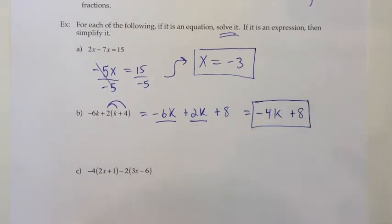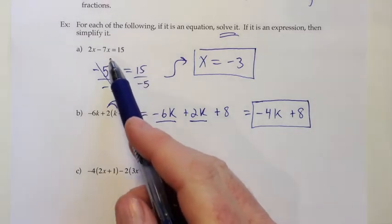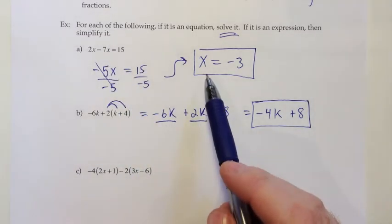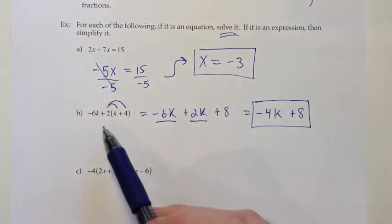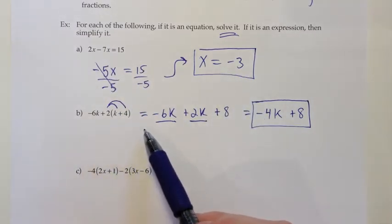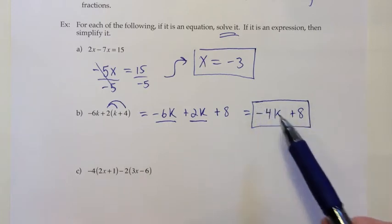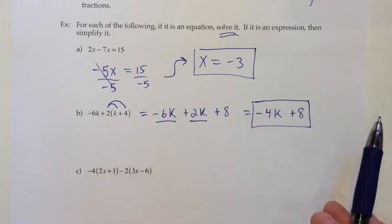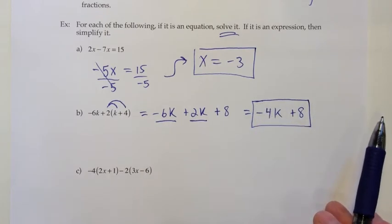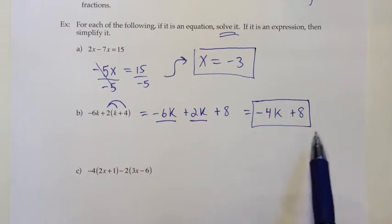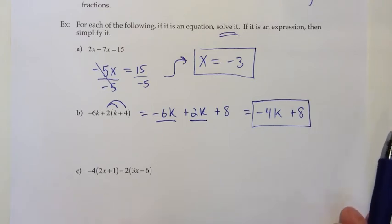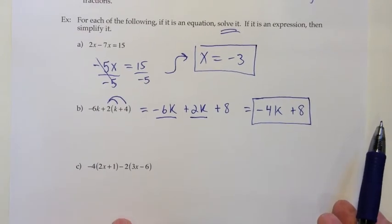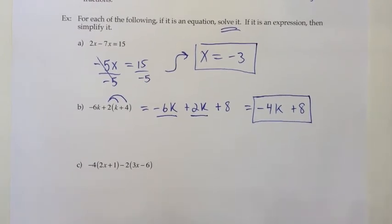Notice the difference in the answers between those last two. When we started with an equation, we got a solution — x equals something. But if we start with an expression, we just get a simplified expression, not a solution. This type does not end saying 'k equals some number.' Let's look at another one.